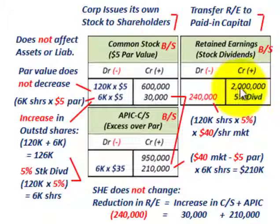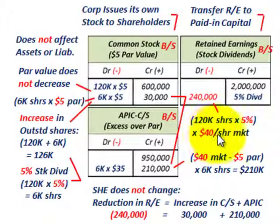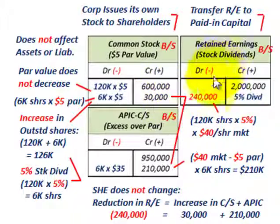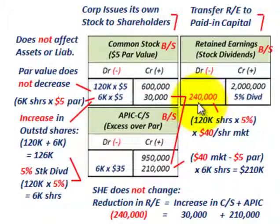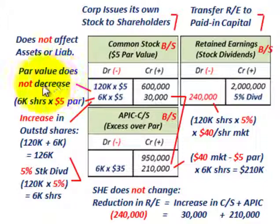Starting with retained earnings, we had a credit of $2 million. With the 5% dividend: 120,000 shares × 5% × $40 market price per share equals $240,000. So we reduce retained earnings by $240,000. We're transferring earned capital into contributed capital — common stock and additional paid-in capital. The $240,000 debit gets split: common stock receives $30,000 credit, based on the par value — 6,000 dividend shares × $5 par value = $30,000.